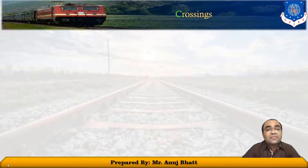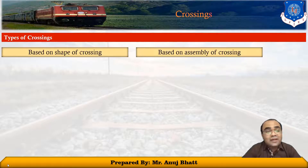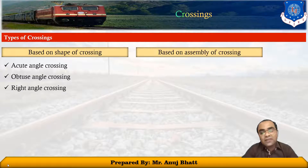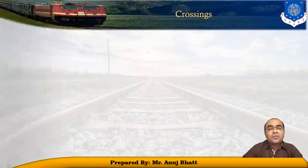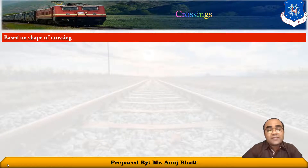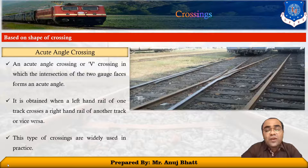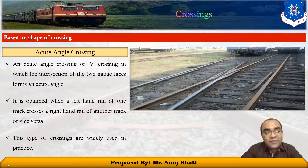The classification of crossings is based on two things: the shape and the assembly of crossings. Based on shape, we have acute angle crossing, obtuse angle crossing, and right-angle crossing. Based on assembly, we have spring crossings and ramp crossings. An acute angle crossing is obtained when a left-hand rail of one track crosses a right-hand rail of another track, or vice versa, at an acute angle. This type of crossing is widely used in Indian railways.